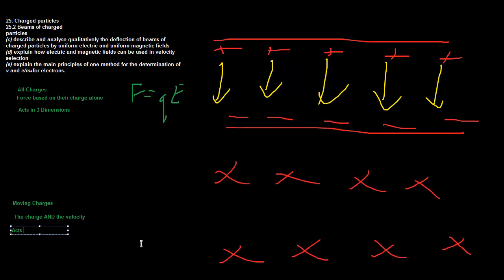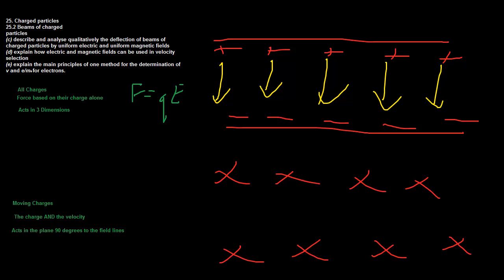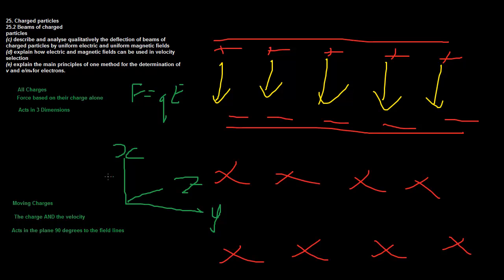The magnetic force acts in the plane 90 degrees to the field lines. If you imagine the X, Y, and Z axes: whatever direction the magnetic field lines are going in, it only acts on motion in the other plane. So if the magnetic field is in the Z plane, only motion in the X-Y plane causes the magnetic field force to be felt.